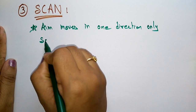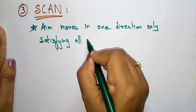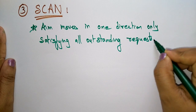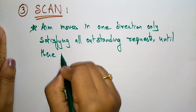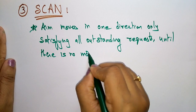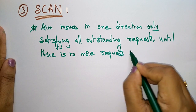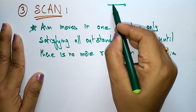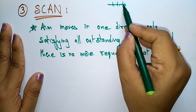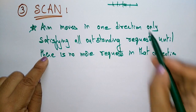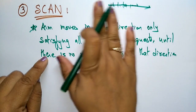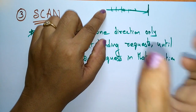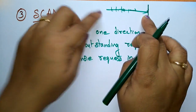In SCAN, the arm moves in only one direction, satisfying all outstanding requests until there is no more request in that direction. Suppose the arm is moving in this direction — it has to serve all outstanding requests. Until there is no more request in that direction, it must be reached even until the end of the track.